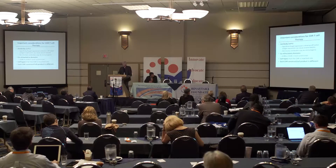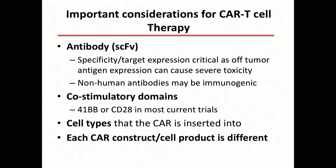The key thing about CAR T-cells is the antibody — a single-chain FV is the portion we're using that binds to the antigen. Specificity and target expression are critical because off-tumor target expression can lead to toxicity. Non-humanized single-chain FVs can be immunogenic, and your immune system can recognize and reject the CAR. If you just put an antibody molecule stuck to a T-cell receptor, it doesn't work well, but adding a co-stimulatory domain — either 4-1BB or CD28 — allows these T-cells to expand when they recognize tumor antigen.